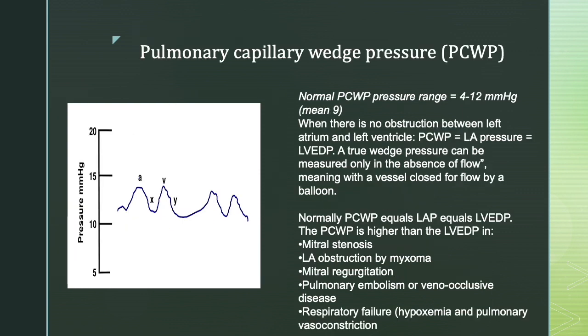The pulmonary capillary wedge pressure normally correlates with left atrial pressure or left ventricular end-diastolic pressure when there is no obstruction between the left atrium and left ventricle. For a true wedge pressure, flow must be absent — achieved by occluding the vessel with the balloon. This pressure is measured by wedging the Swan-Ganz catheter into the smaller pulmonary arterial branches and serves as a surrogate for left atrial and left ventricular end-diastolic pressures. It increases in pulmonary embolism, venous occlusive disease, left atrial obstruction, or mitral stenosis.